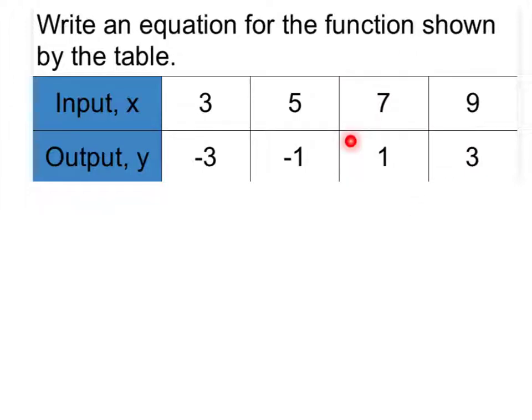So we can do this in a variety of ways. We could start at the beginning here over on the left-hand side and say, okay, well how do we get an input of 3 to an output of negative 3? Well, I could multiply by negative 1, but by looking at the next term in our sequence here, that doesn't work.